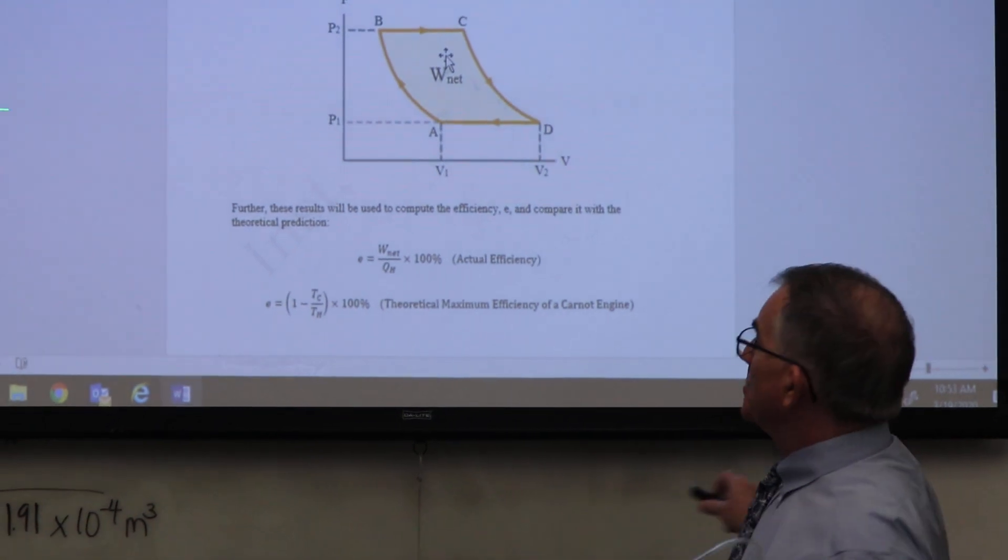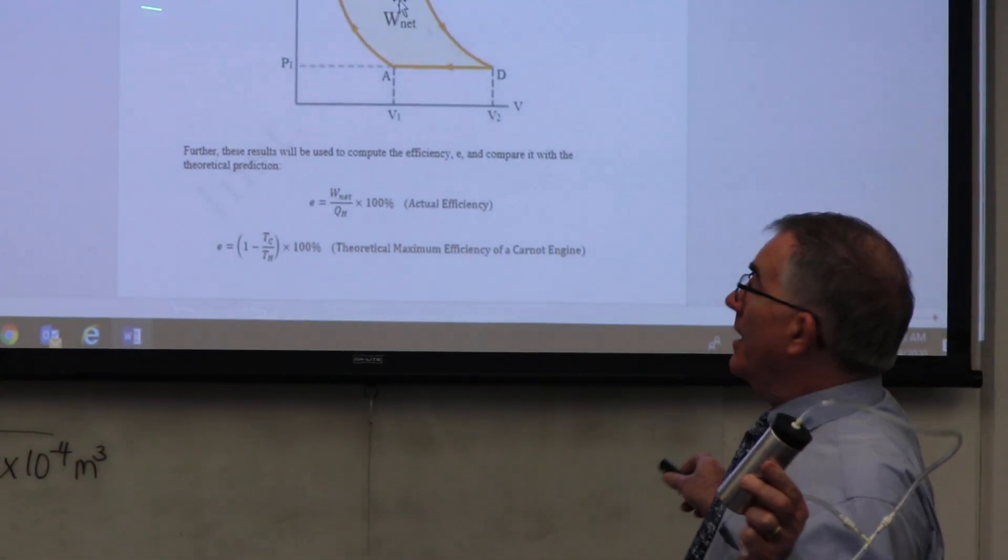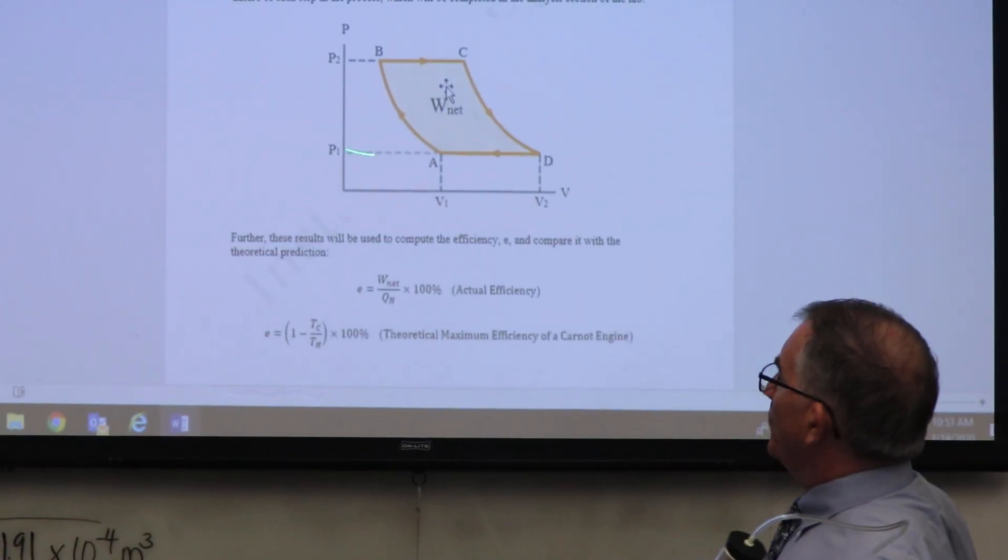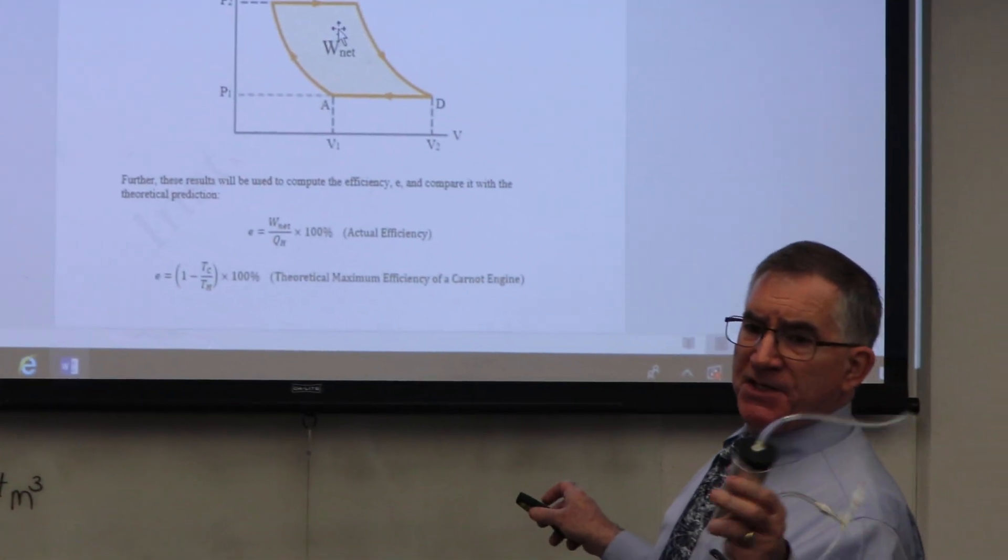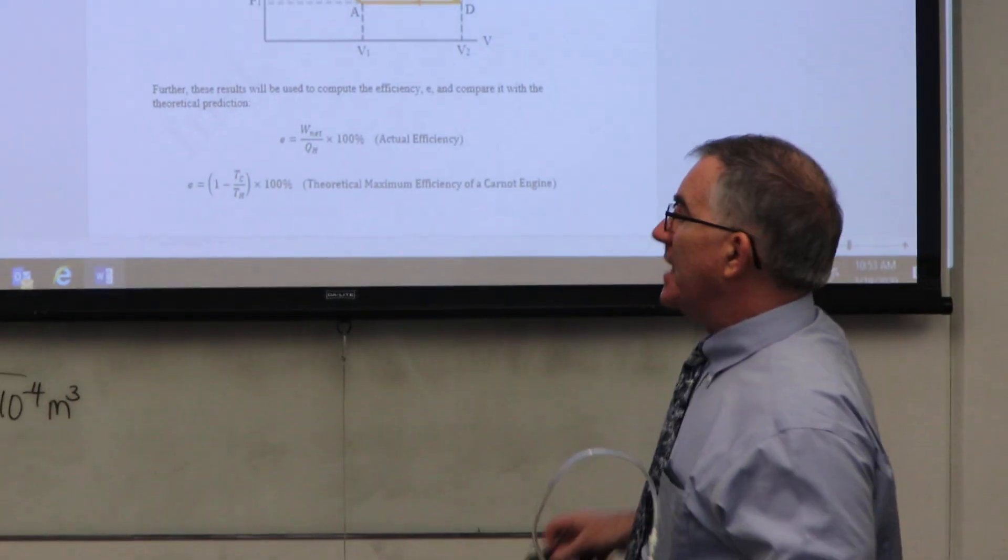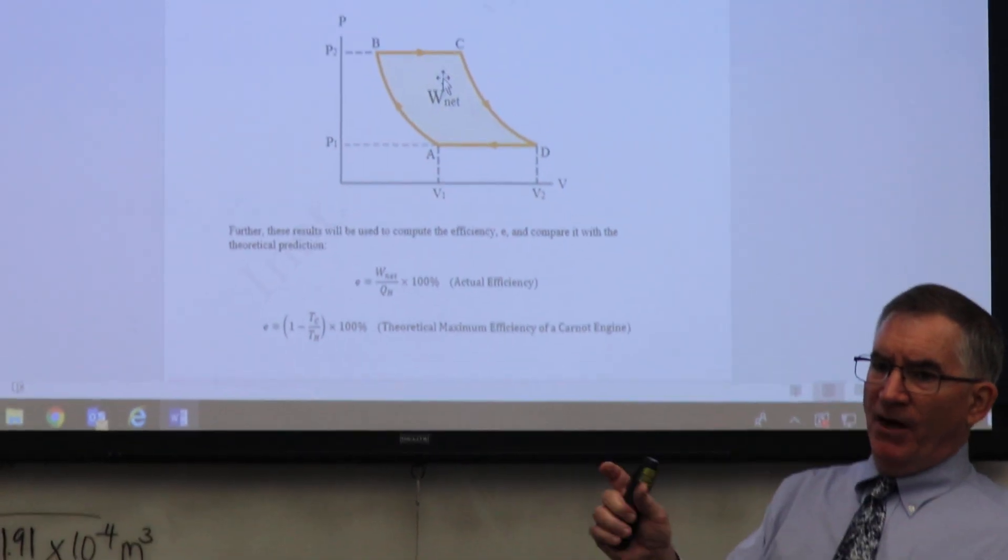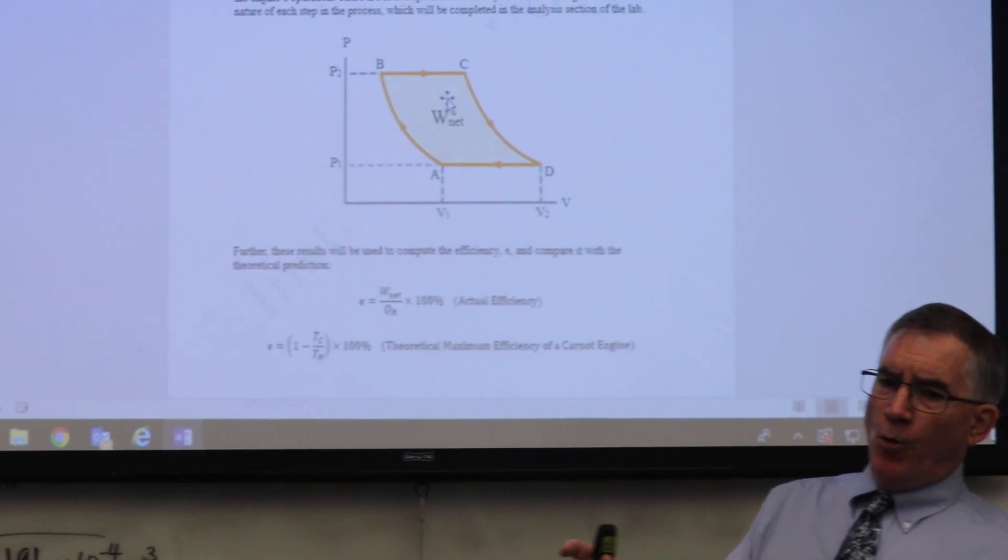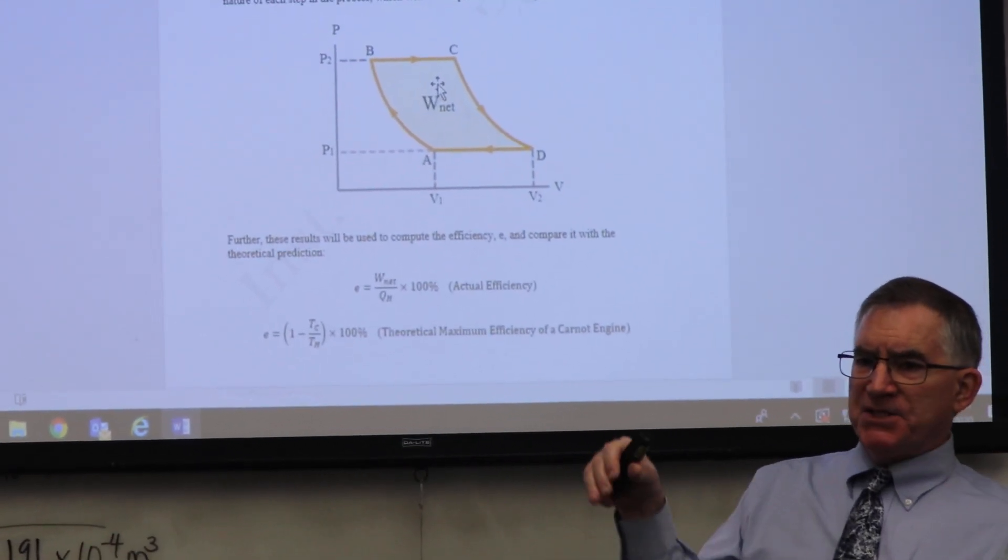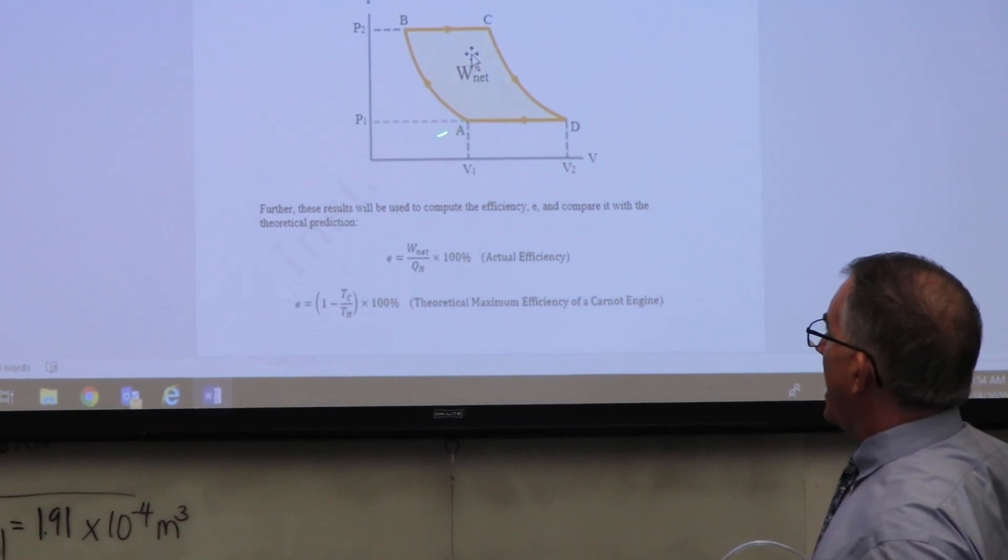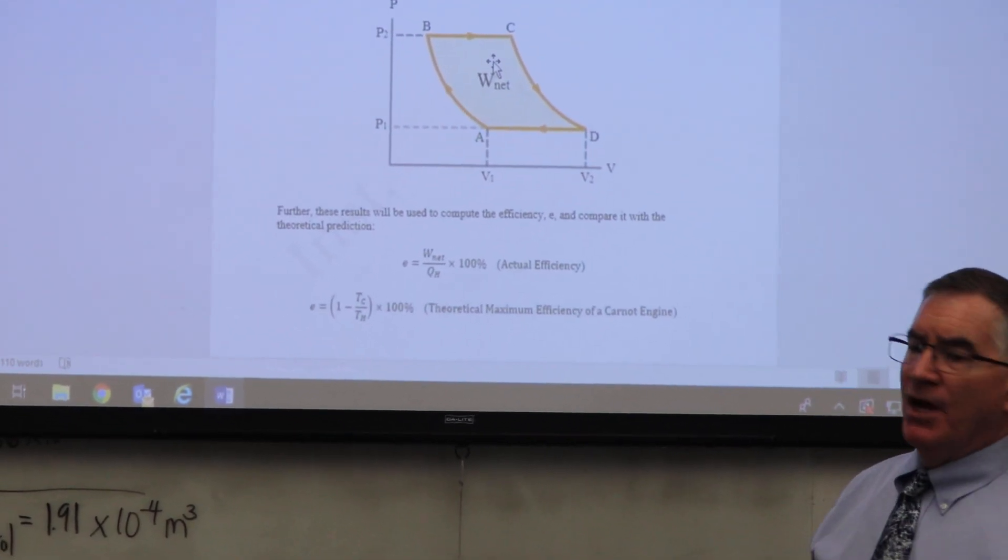Then what happens first is we take this canister, and we put it, I'm sorry, take that back. We take the 200-gram mass, and we put it in the top of the cylinder that's going to do the work on the mass. That cylinder will compress the gas, because it's got 200 grams of weight. So as the pressure goes up, the volume goes down.